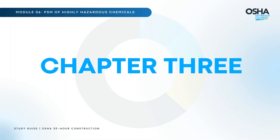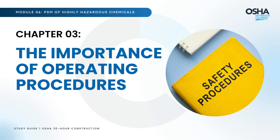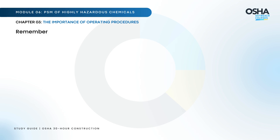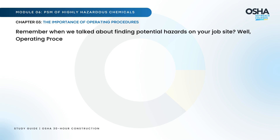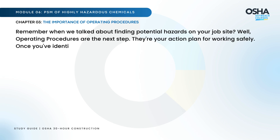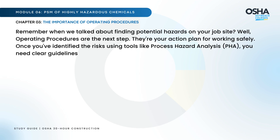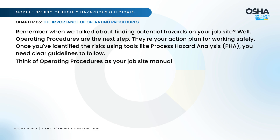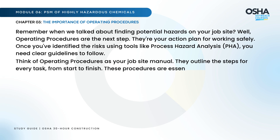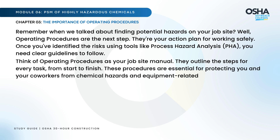Moving on to Chapter 3: The Importance of Operating Procedures. Operating procedures are the next step after identifying potential hazards — they're your action plan for working safely. Once you've identified risks using tools like process hazard analysis, you need clear guidelines to follow. Think of operating procedures as your job site manual, outlining the steps for every task from start to finish and protecting you and your co-workers from chemical hazards and equipment-related risks.